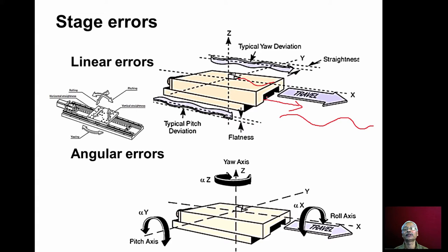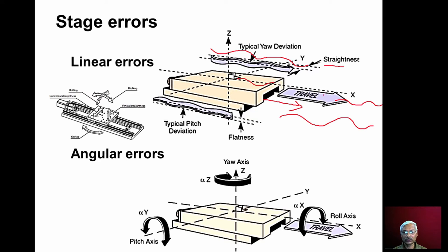Similarly, when the table moves, it may move in the horizontal or vertical plane — this is straightness error. These linear errors occur in all three axes: in the x-axis movement, y-axis movement, as well as z-axis movement.